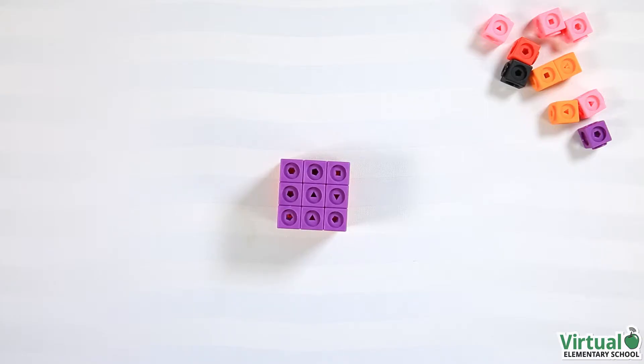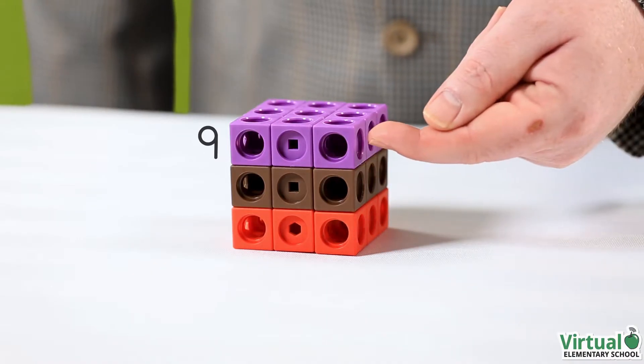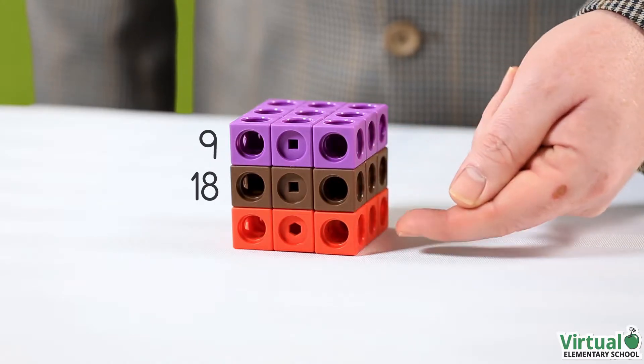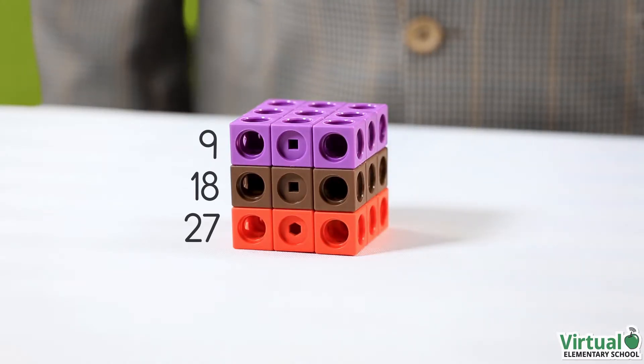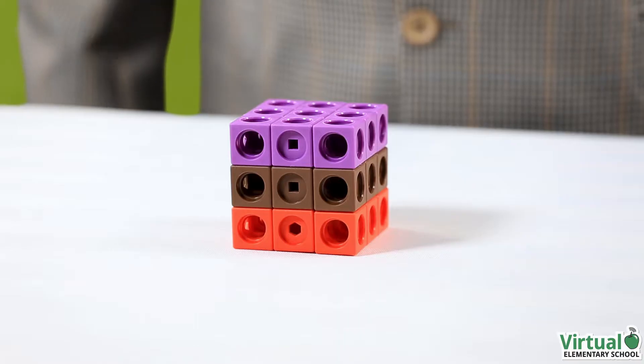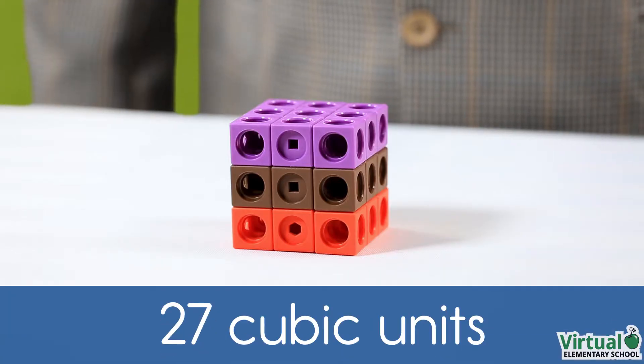Nine cubes in each layer means that there are nine, eighteen, twenty-seven cubes in all. The volume of this large cube is twenty-seven cubic units.